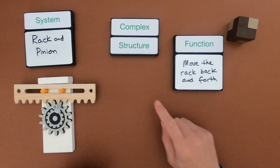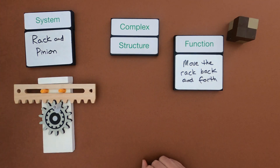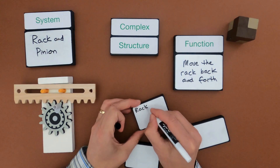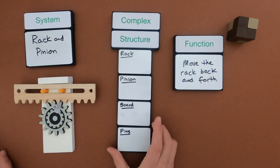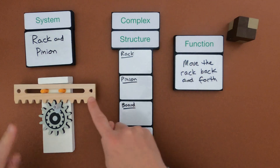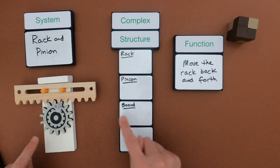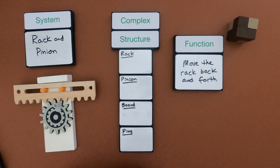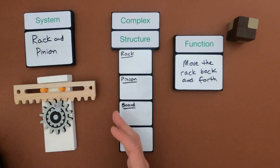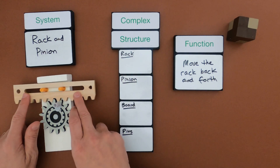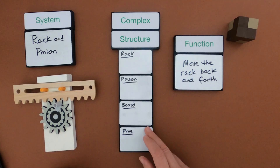The next thing I want to do is identify all the structures within this complex structure. The big structures are the rack, the pinion which is the bottom gear part, the board which is white, and the pins which are these two orange parts. Now I've identified the structures but I want to describe what each structure is — the shapes and what it's made up of.